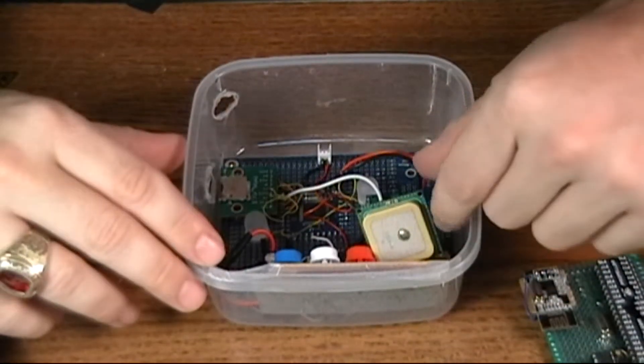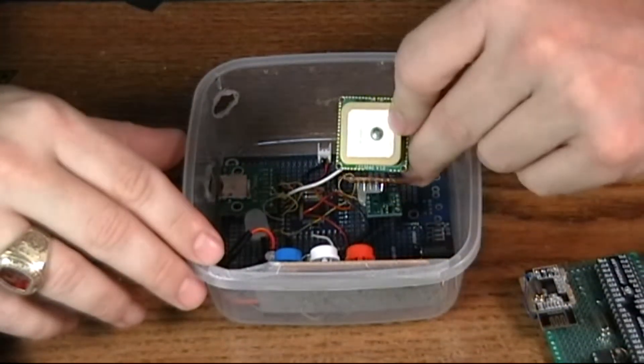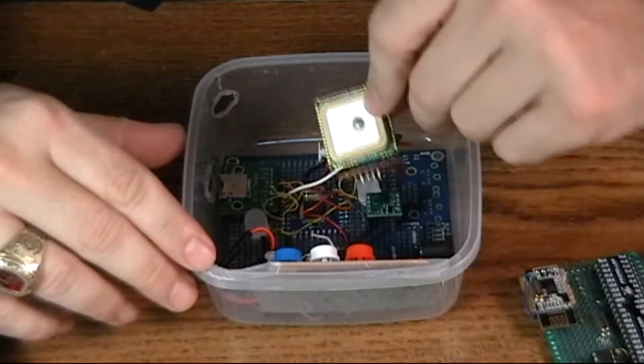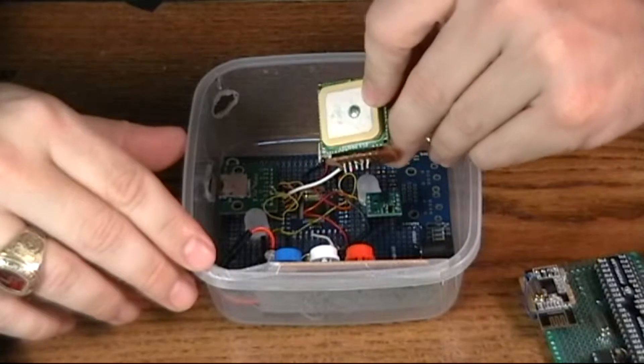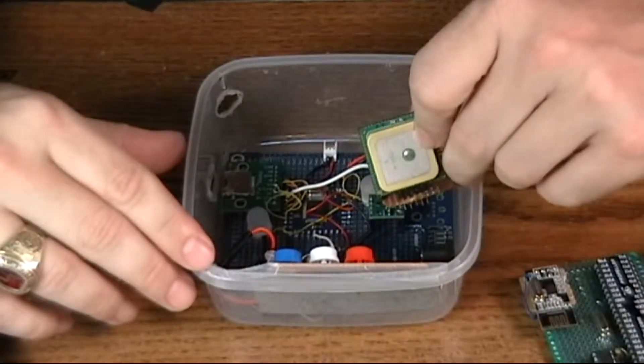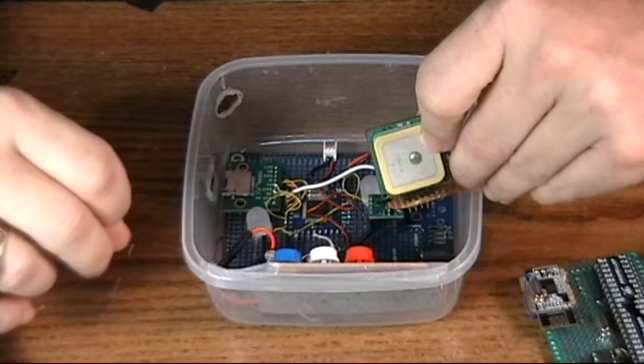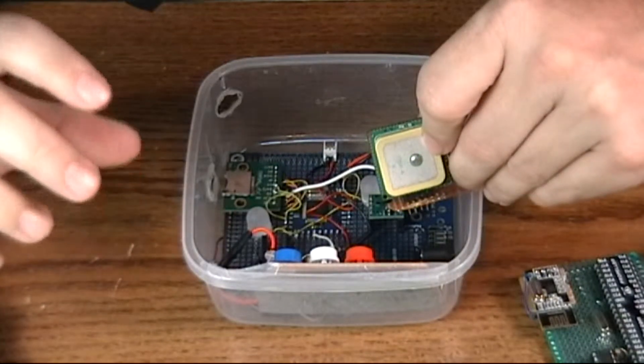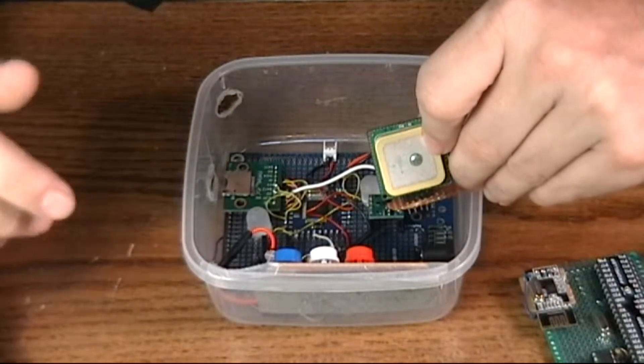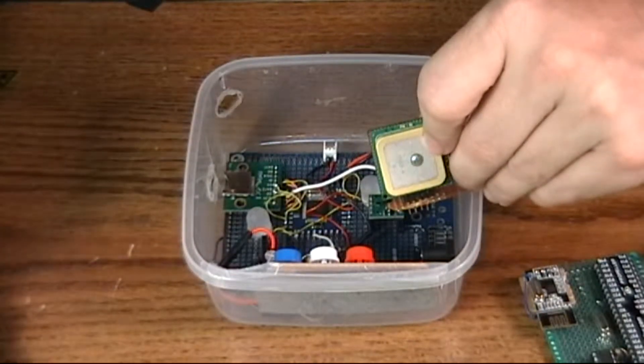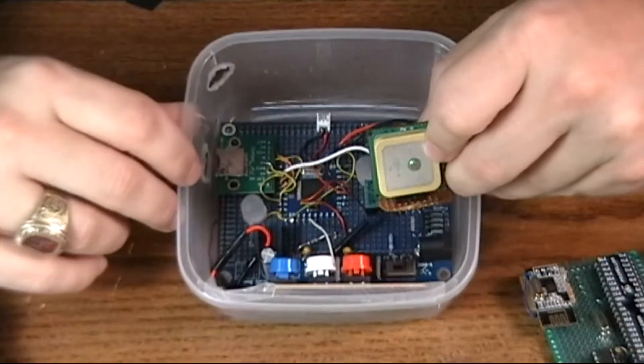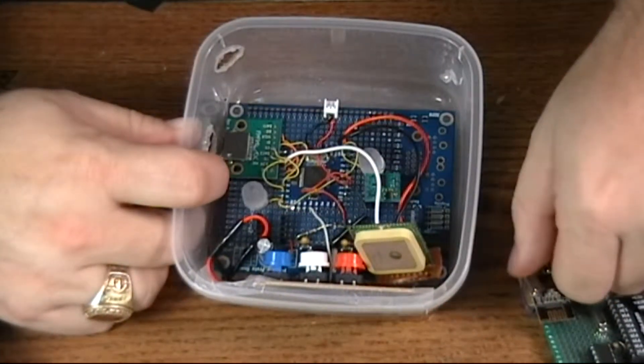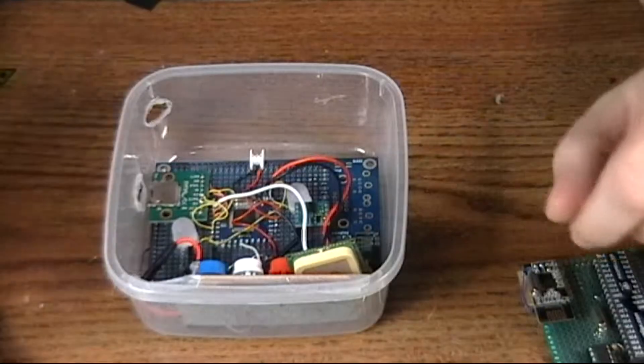The GPS data logger takes the coordinates from the GPS module—I can't remember what the model this one is, but it tracks 66 satellites. It takes the information from there and it writes a KML file, which is a file that you can open up in Google Earth, and it writes that file to a micro SD card with the Parallax writer here.